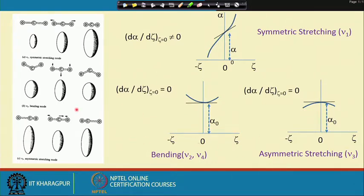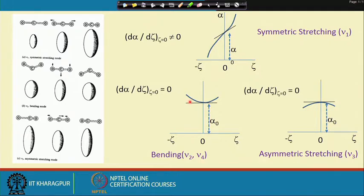In the other cases involving bending — bent in either direction — when the displacement is 0, d(alpha)/d(xi) equals 0 in both cases corresponding to nu-2, nu-4, and nu-3. This fundamental understanding tells us that for simple molecules like water, carbon dioxide, or methane, we know how many fundamental modes will be Raman active and can expect Raman peaks accordingly.